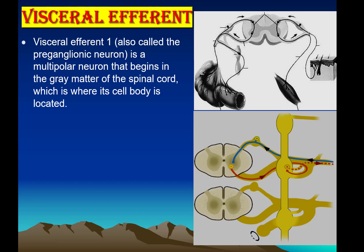Visceral efferent neuron 1, also called the pre-ganglionic neuron, is the first neuron. In the autonomic nervous system, there is a ganglion located paravertebrally, and when multiple neurons join together they make a chain called the paravertebral sympathetic chain. In this chain, the pre-ganglionic neuron terminates.